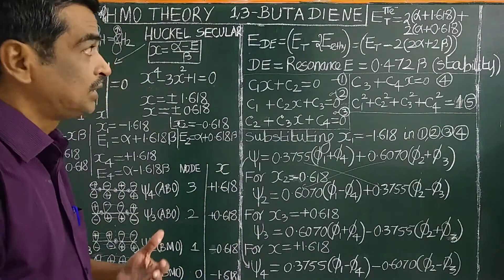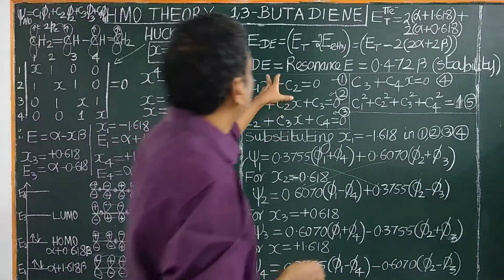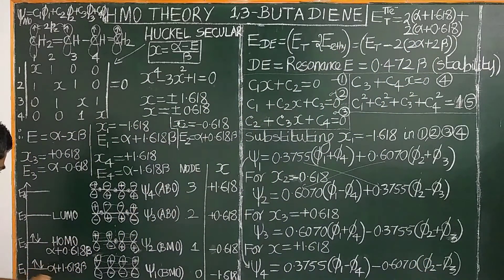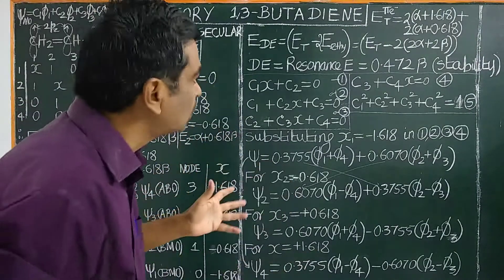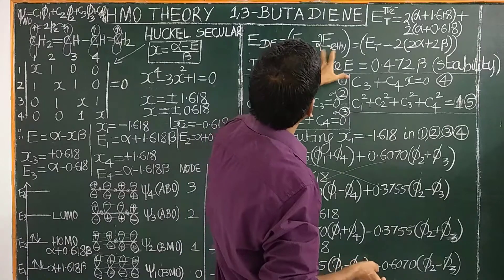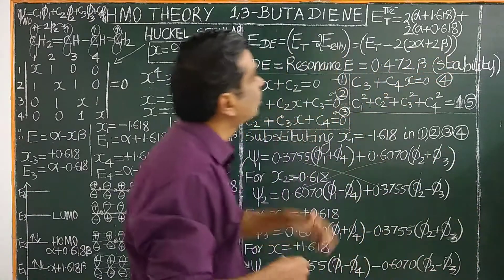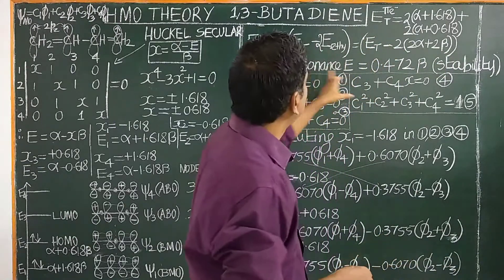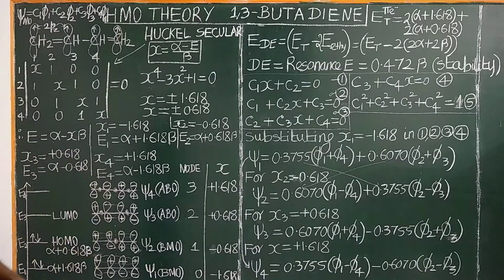Now let us calculate the resonance energy, which is a measure of the stability of the molecule. The total pi electron energy equals 2(α + 1.618β) + 2(α + 0.618β). Comparing with two isolated ethylene molecules (where there is no delocalization or conjugation), whose total pi energy is 2(2α + 2β), the delocalization energy equals E_total − 2(2α + 2β) = 0.432β. This is also called the stabilization energy or resonance energy, and is often asked in competitive examinations.